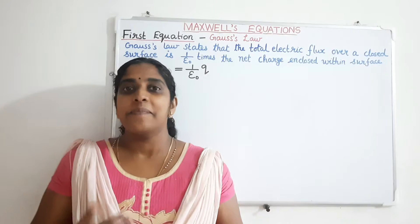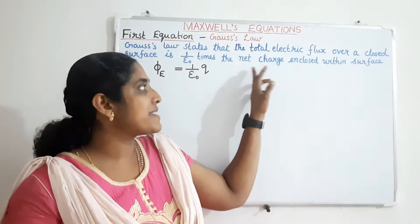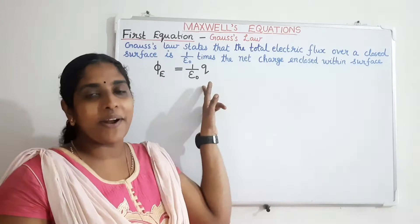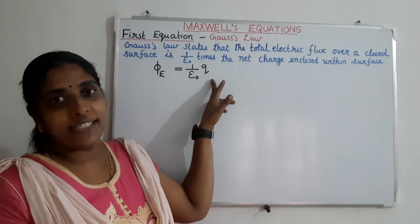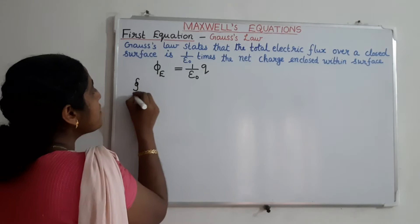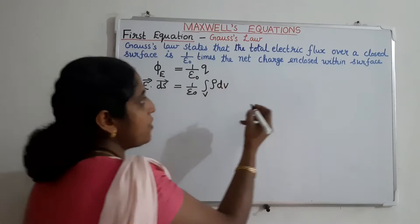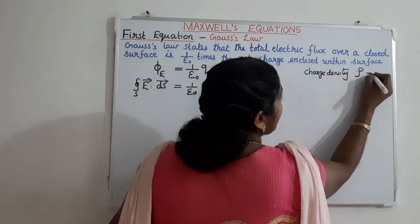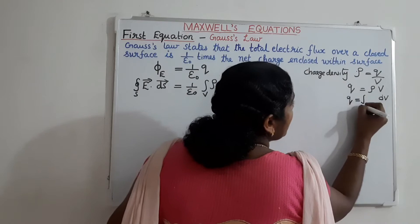Maxwell's first equation is based on Gauss's law. Gauss's law states that the total electric flux over a closed surface is equal to 1 by epsilon-0 times the net charge enclosed within the surface — that is, total electric flux phi_E equals 1 by epsilon-0 times Q. We can express this in integral form by replacing these quantities with their integrals. Electric flux is the surface integral of the electric field, and charge Q is the volume integral of the charge density rho, because charge density rho equals charge by volume. So Q equals the volume integral of the charge density.